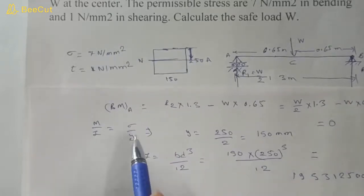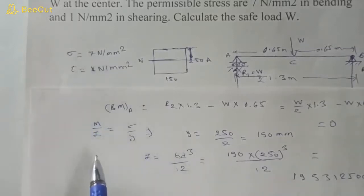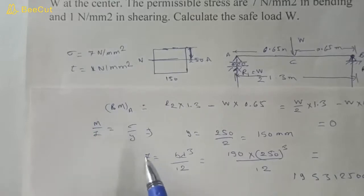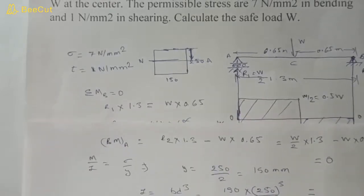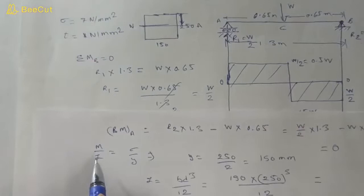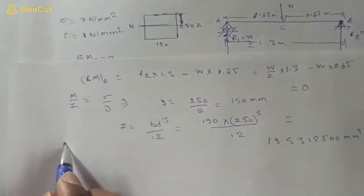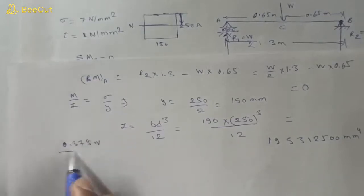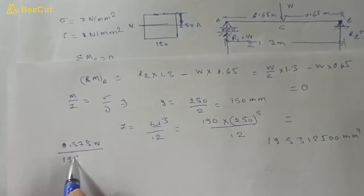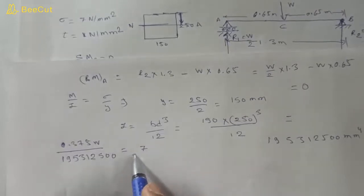We have I = 195,312,500 mm⁴, y = 125 mm, and sigma = 7 N/mm². The maximum bending moment is 0.325W (converted to N·mm as 325W). Substituting into M/I = sigma/y: 325W / 195,312,500 = 7 / 125.